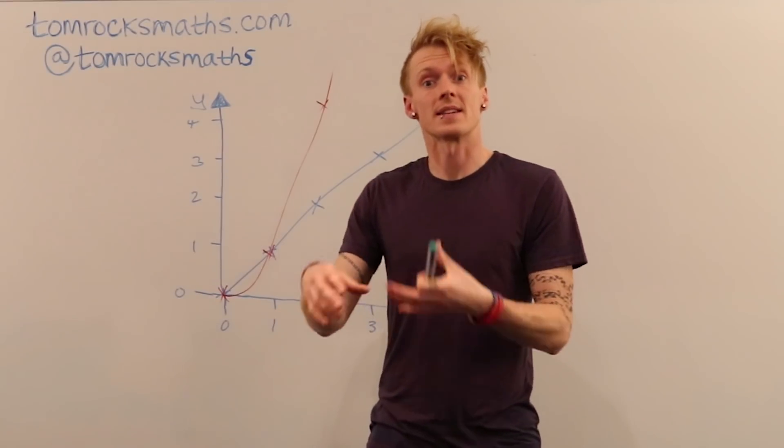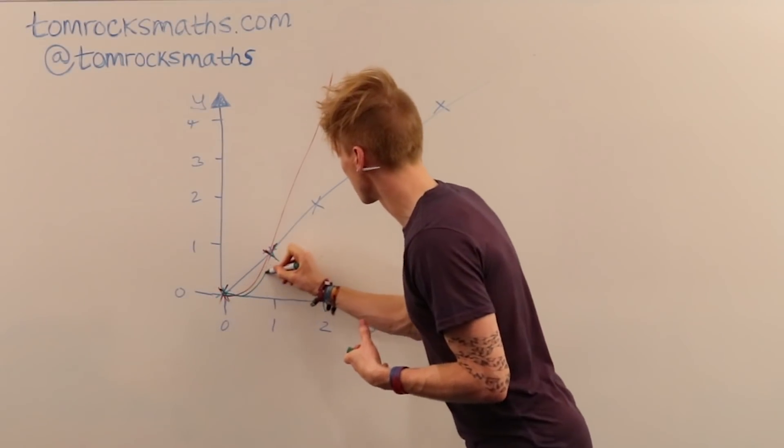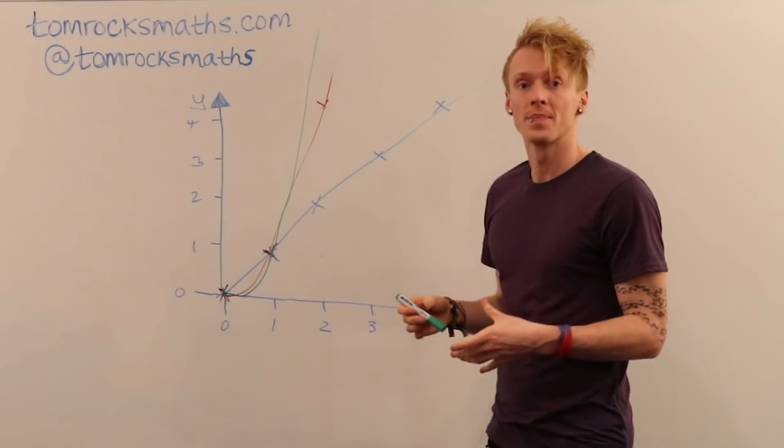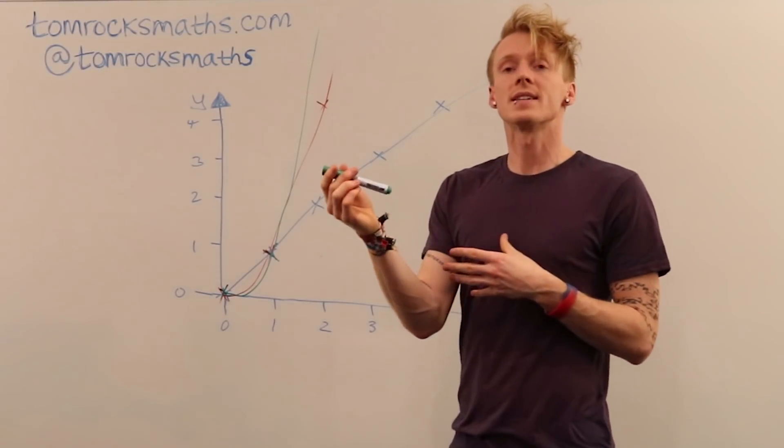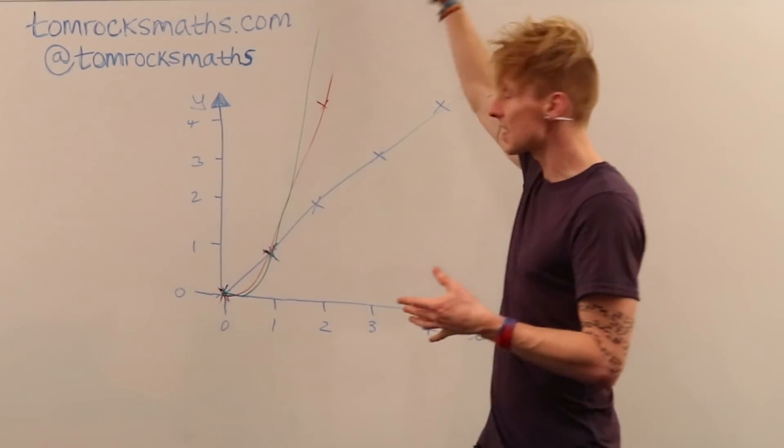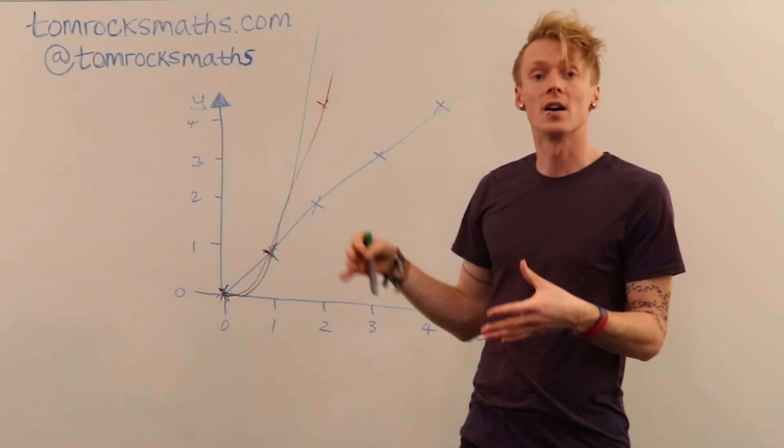We can carry on like this and maybe consider x cubed next, and in this instance it's going to be even steeper than the squared one. And then what happens if we consider say y equals x to the fourth? Following the pattern we'd expect an even steeper curve, maybe for x to the fifth an even steeper curve again.